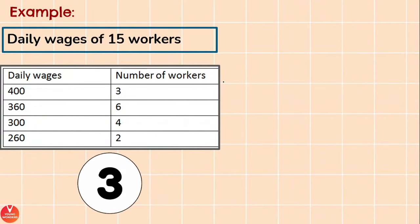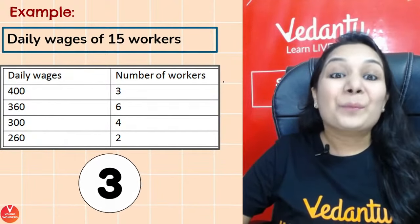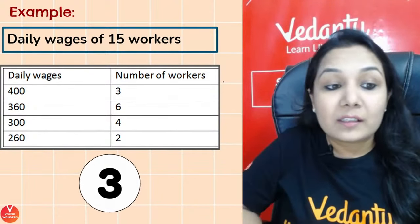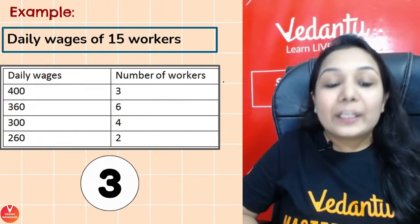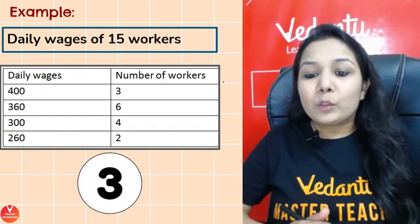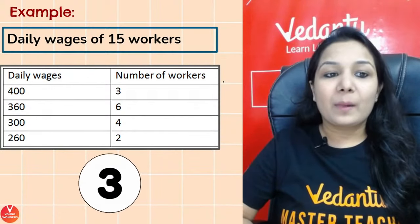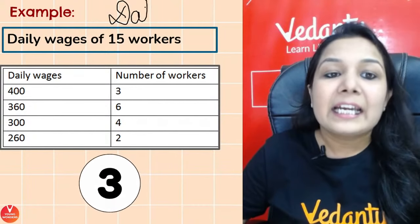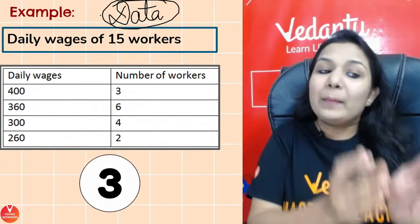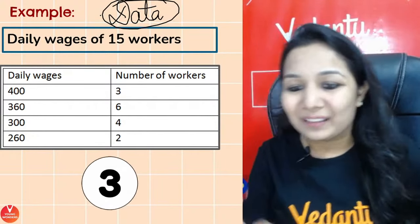Here I am showing you the daily wages of 15 workers. 400 is provided to 3 workers, 360 is given to 6 workers, 300 is given to 4 workers, and 260 is given to 2 workers. So we have organized the data. Just by seeing this table, you can know how many workers get which wages — instead of writing it in a random way.